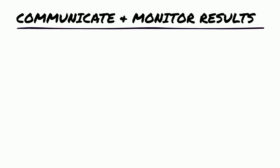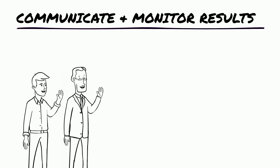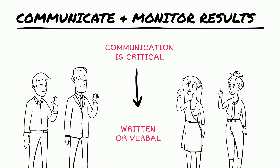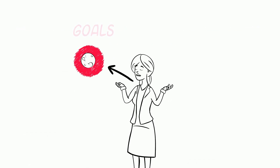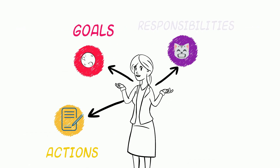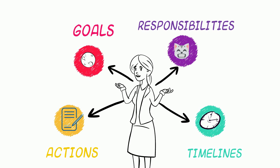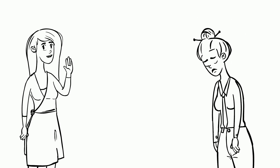Communicate and monitor results. Communication is critical to the success of any plan. Communication can be written or verbal but should always be recorded to ensure all parties understand the goal, actions, responsibility and timelines. Written action plans, work plans, team meetings, debriefs and regular reports are all ways to communicate and monitor results. And don't forget to share both success and failure.